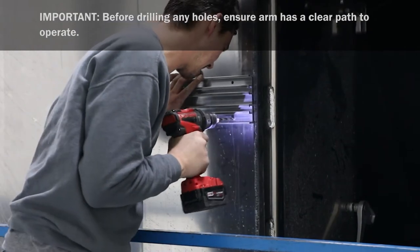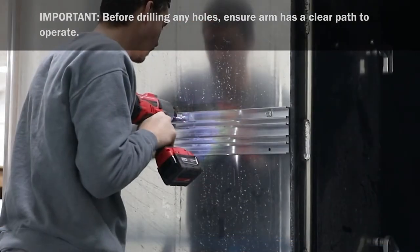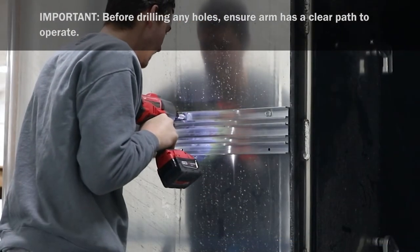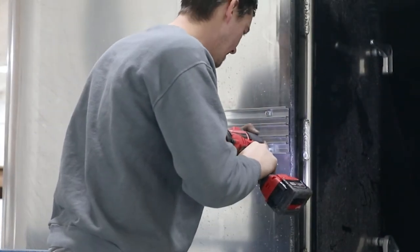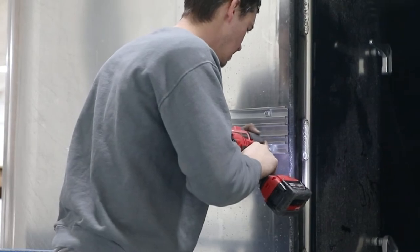Drill holes at marked locations. Attach mounting assembly to box wall by turning self-threading bolt to cut threads, then turn back out. Secure using bolts. When possible, use nuts on backside.